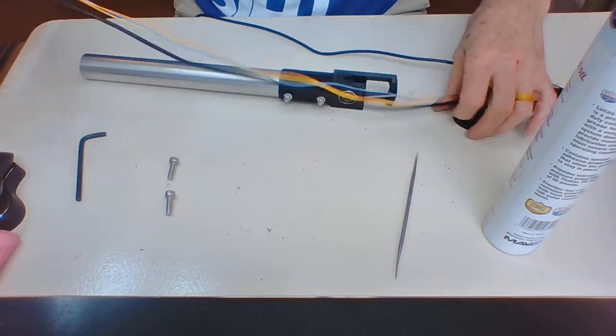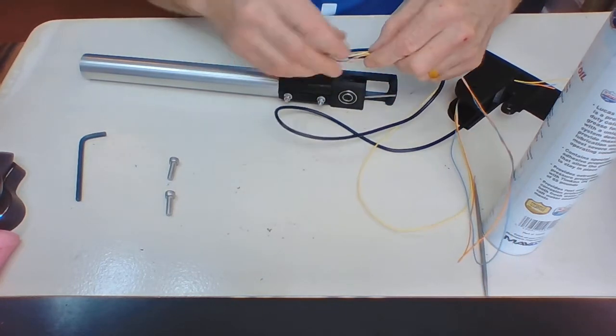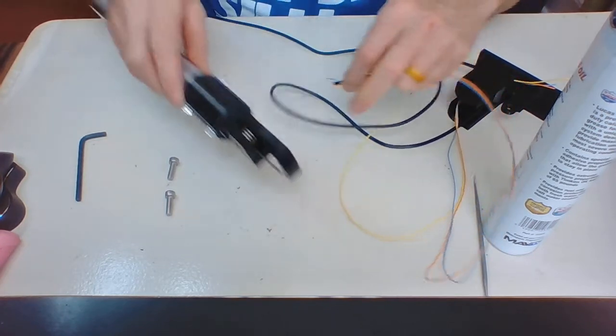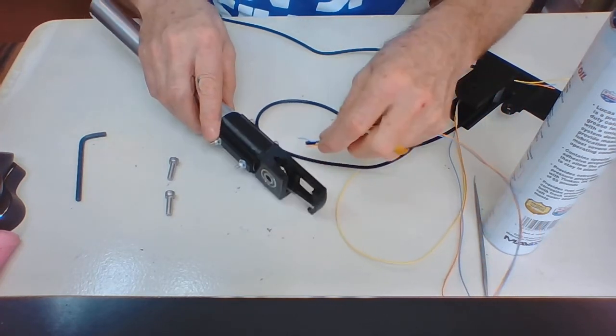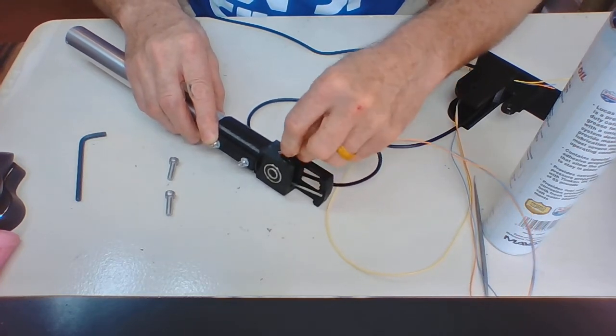So we're going to take this bundle, and these three wires, and the USB cable, and we're going to feed them into this little hole here in the back of the pivot, like that.